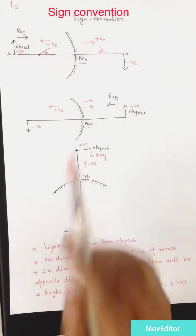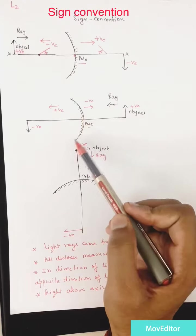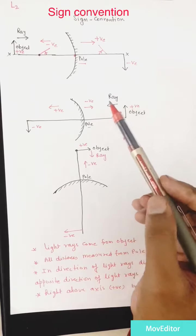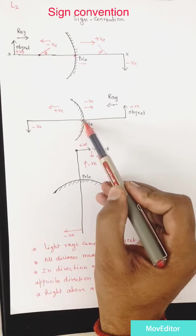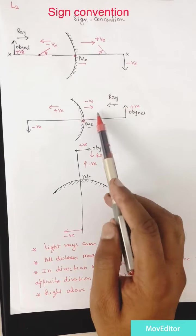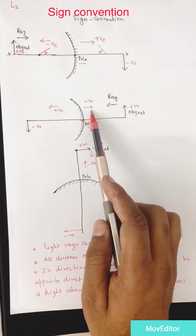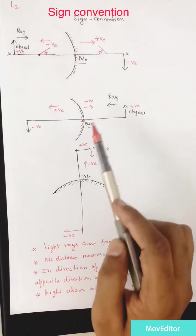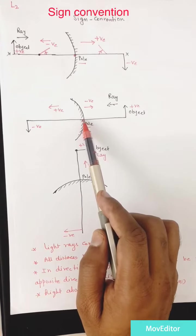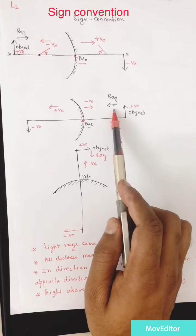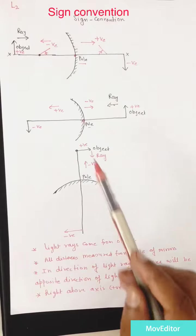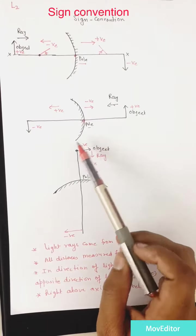Let's apply this sign convention to a convex mirror. This is the object, and light ray comes from the object. You measure all distances from the pole of the mirror. While measuring object distance, you are moving to the right side, but you are moving opposite to the direction of the light ray, so object distance in this case will be negative — even if the object is on the right side.